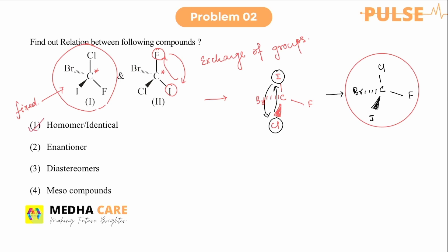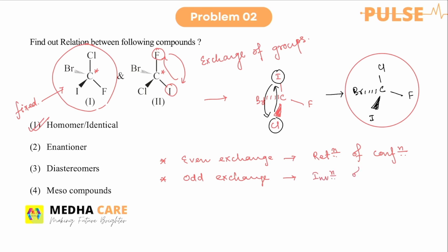After an even number of exchanges we get the identical structure, so the compound is a homomer. Remember: if we do an even number of group exchanges at an asymmetric carbon, the configuration is retained — retention of configuration. If we do an odd number of exchanges, the configuration changes — inversion of configuration takes place.